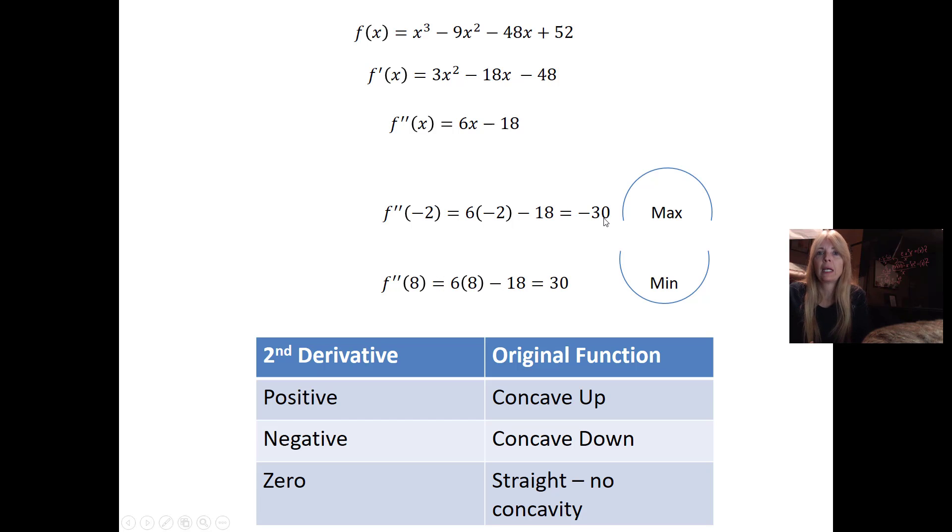Now what I do is I plug the critical points into the second derivatives. There's my negative 2 and 8. I took the second derivative, I plug in the critical points into my second derivative. If I get a negative, it's sad, it's a frown face, it's a max. If I get a positive, it's happy, it's a min. This is just a quicker way if your second derivative is pretty fast.